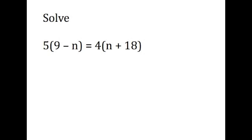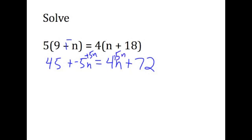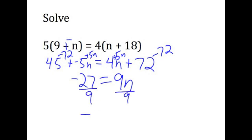I like to do this, definition of subtraction. Then I apply the distributive property on this problem, and 4 times 18 is 72. I'm going to add 5n to both sides, like this, and at the same time subtract 72 from both sides. 45 minus 72 is negative 27, and 4n plus 5n is 9n. We're going to divide by 9 and get negative 3 equals n. That is the solution to the first problem.